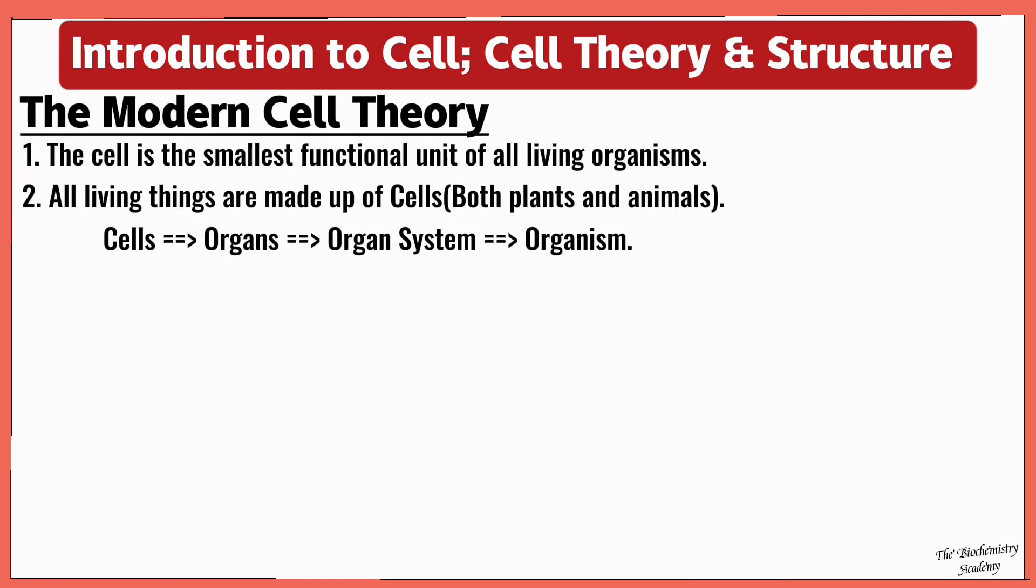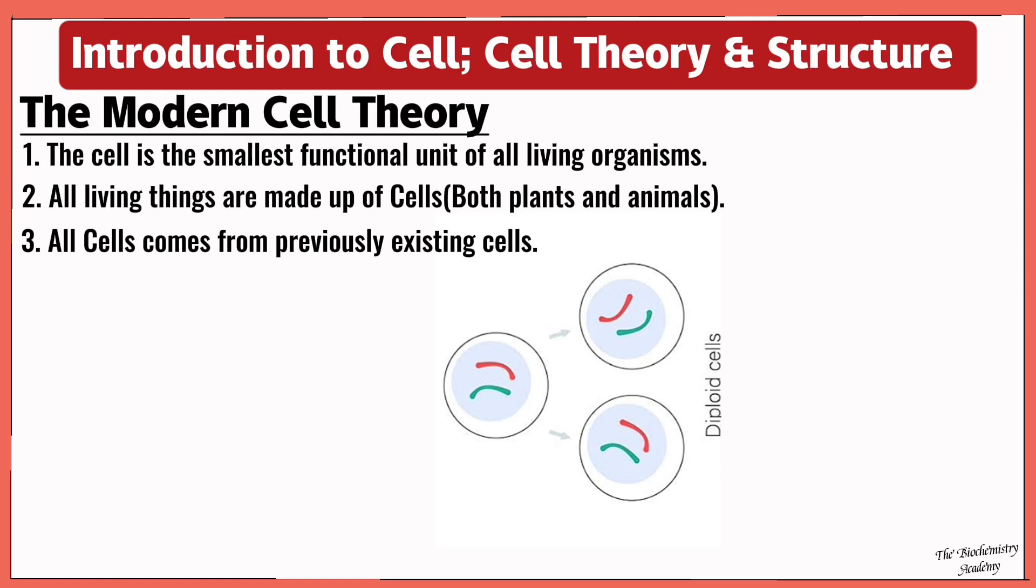The third modern cell theory is that all cells come from other pre-existing cells. For example, when a cell divides, it creates two new cells which then grow and divide themselves to form two other new cells, and so on.